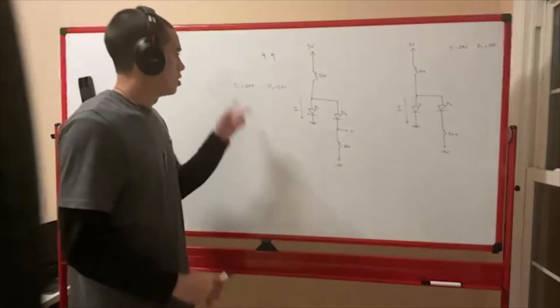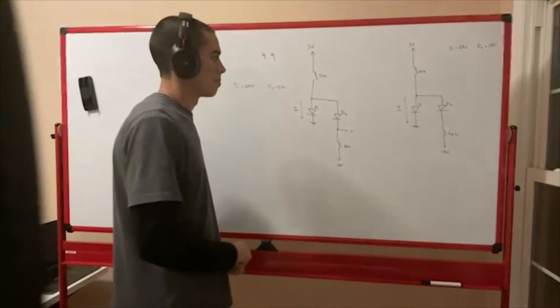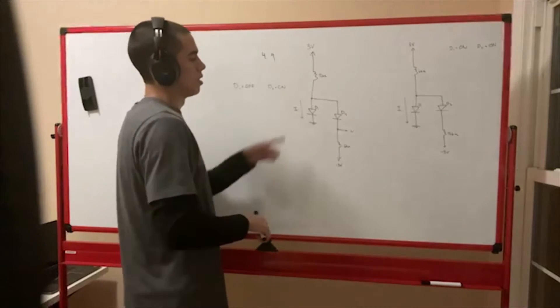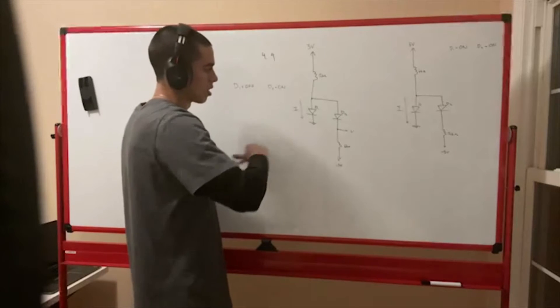For A, D1 is going to be off and D2 is going to be on. So if D1 is off and D2 is on, it's going to be an open circuit, so the current is going to be zero.